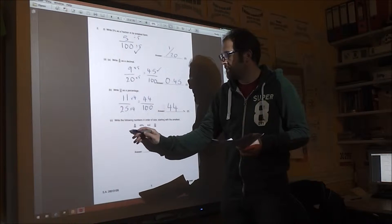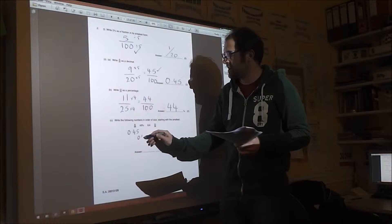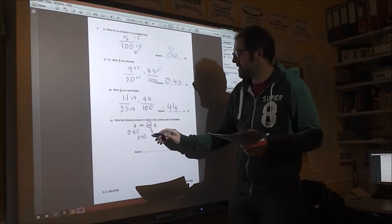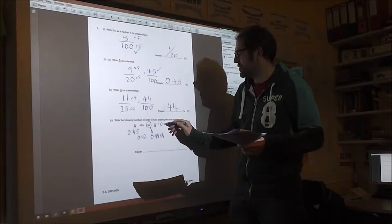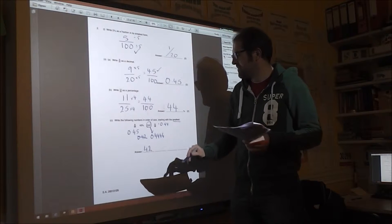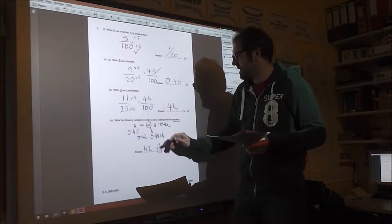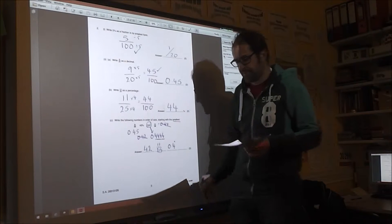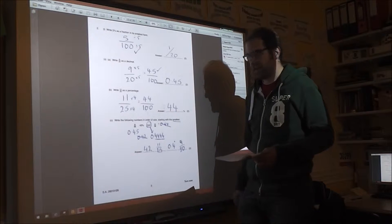11/25ths. Well, 25 goes into 100 four times. So multiply top and bottom by four. And you get 44 over 100, which means it's 44%. And the final part, I prefer writing them as decimals. This one, 0.4 recurring, it's 0.4444 and so on. And then that one's 0.44. The smallest is 42%. And then it's 11/25ths. And then it's 0.4 recurring. And then finally, it's 9/20ths, which is the biggest one there.